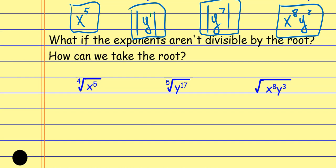Most of the time, we'll go the route of 'assume all variables are positive,' which just means don't worry about putting absolute value. So let's take this a step further. We just talked about dividing the exponents — but what if they're not divisible? What if the exponents aren't divisible by the root? Like here: five's not divisible by four, and seventeen's not divisible by five.